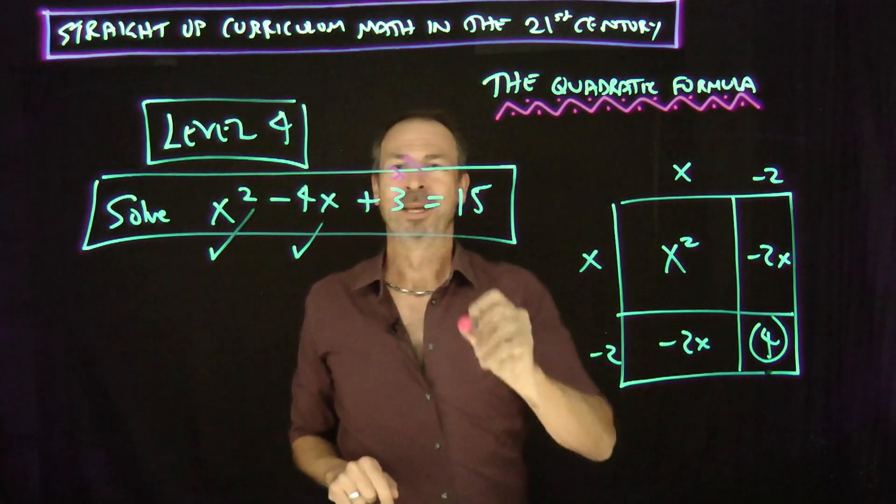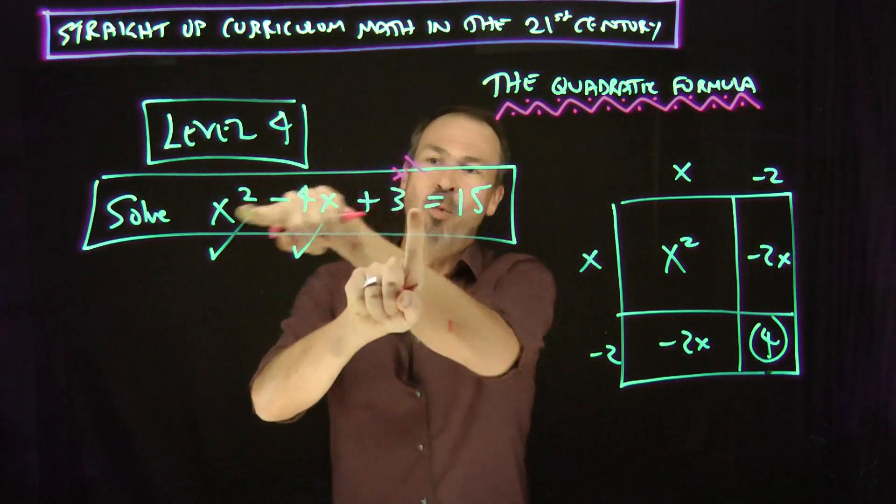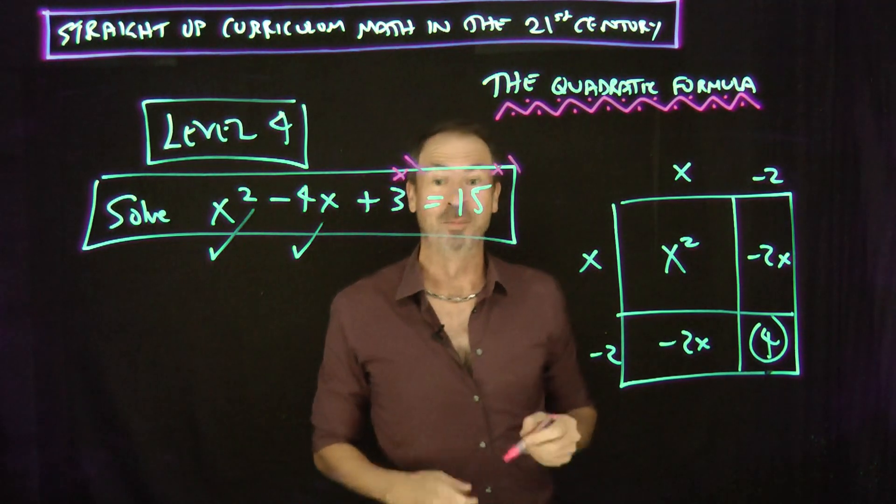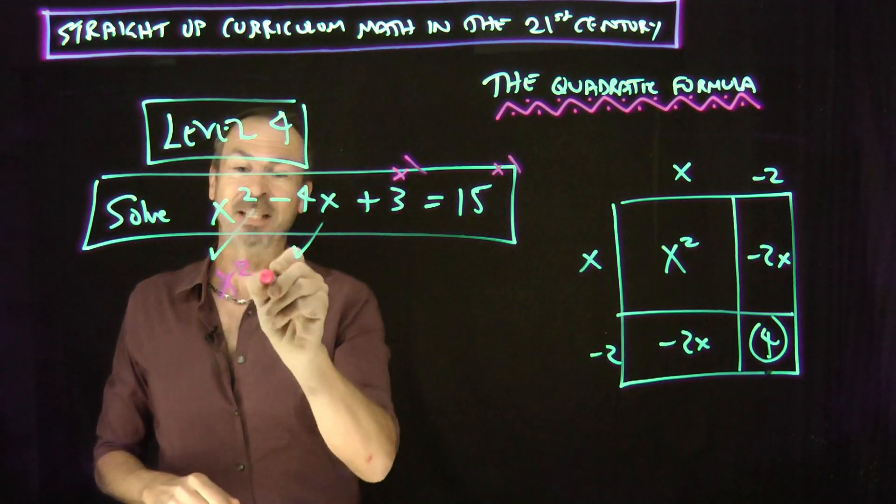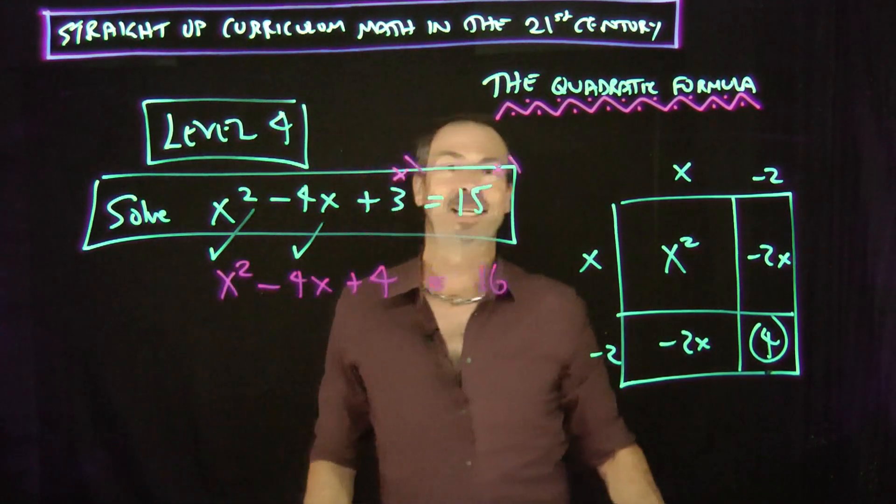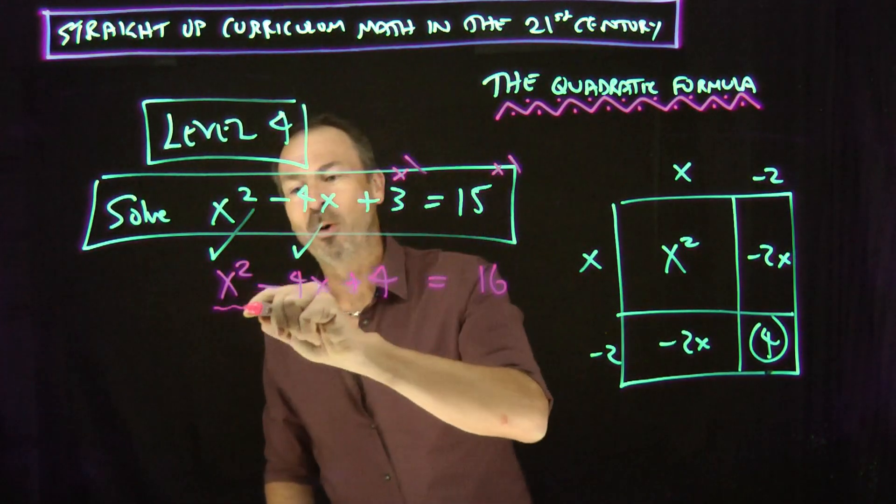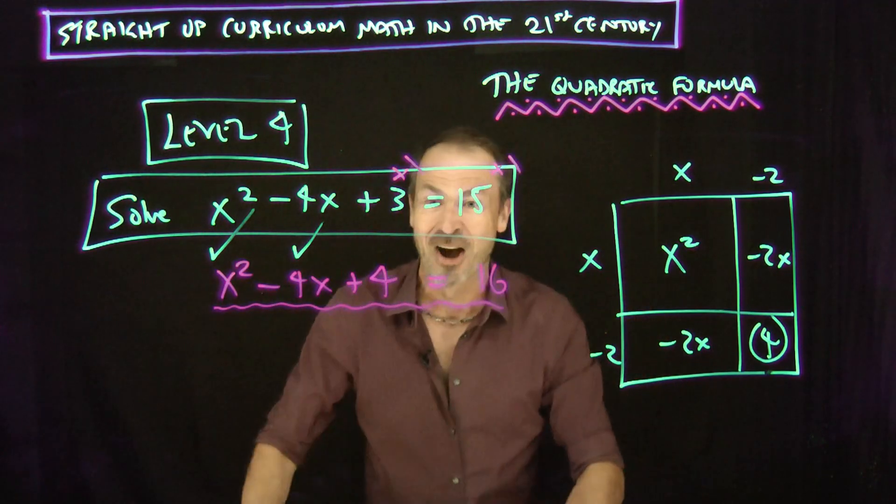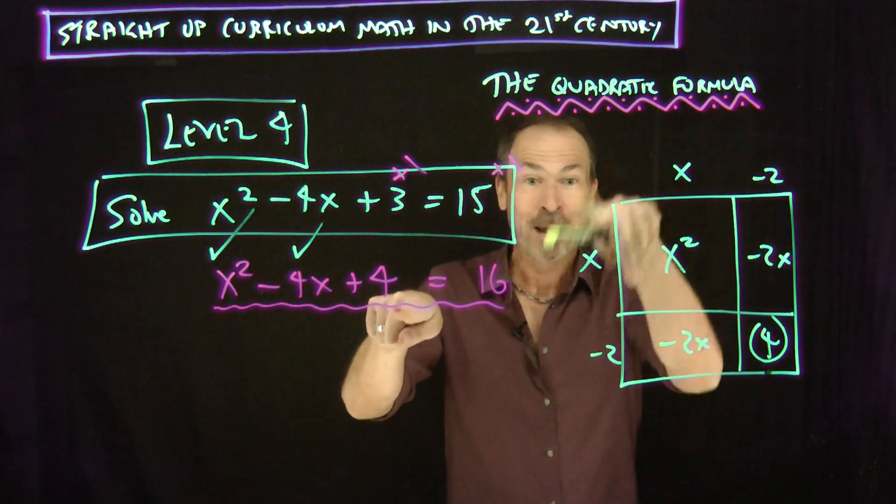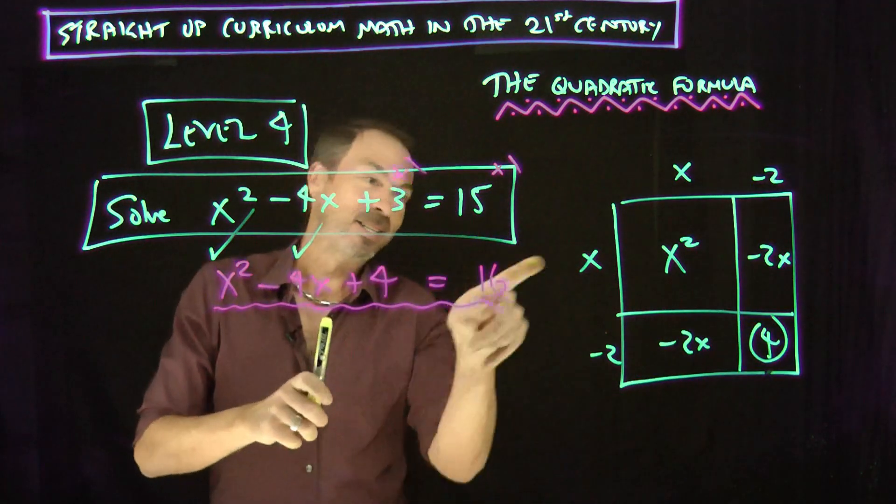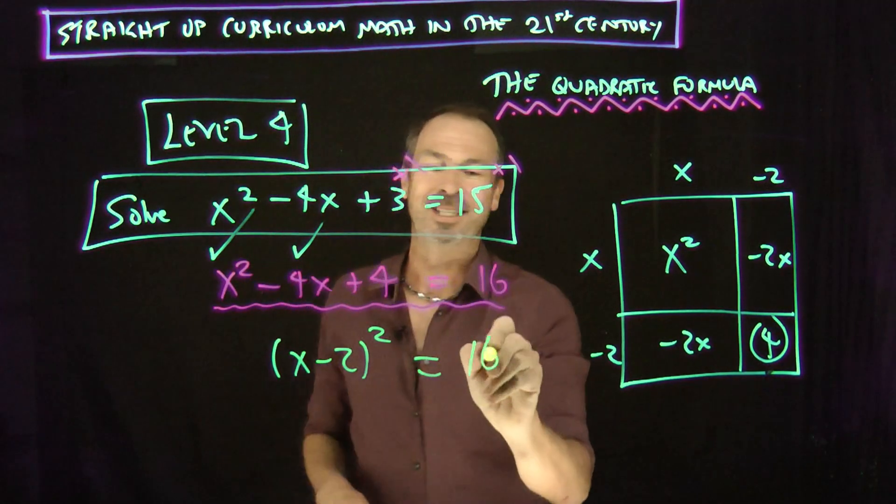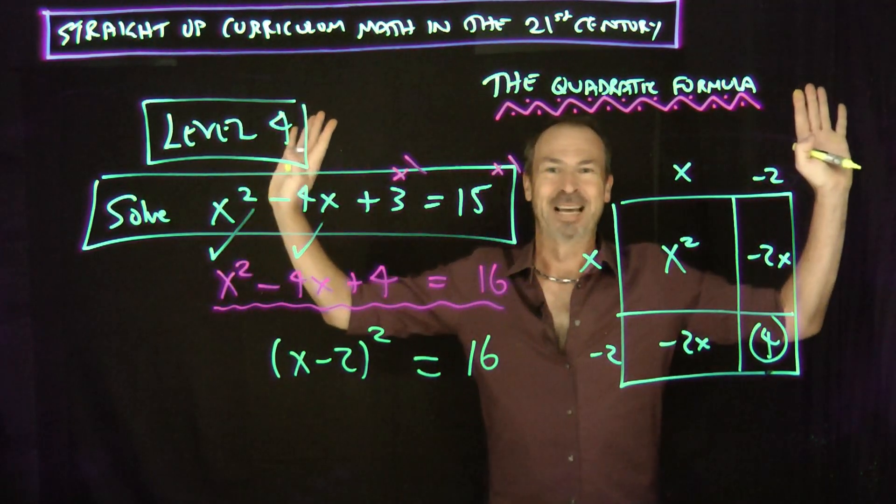How can I make that 3 a 4? Let me add 1. But there are consequences. I can't just add 1 to the left-hand side. The consequences are going to have to be, I'm going to have to add 1 to the right-hand side as well. So this equation is really x squared minus 4x plus 4 equals 16. Let me work with that instead. Because x squared minus 4x plus 4 is precisely this picture. This left-hand side is a square that's x minus 2 by x minus 2. So x minus 2 squared equals 16. And we're back to level 2.